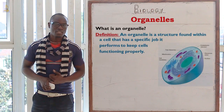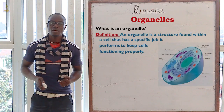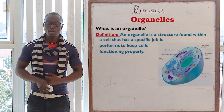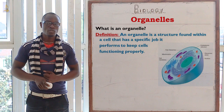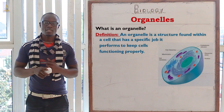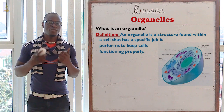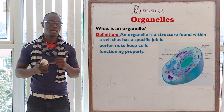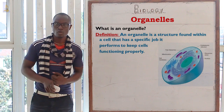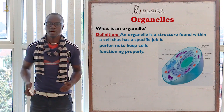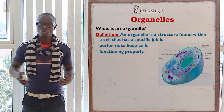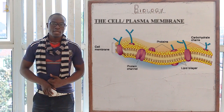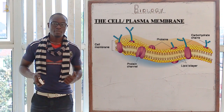Let's look at the different structures as seen under the electron microscope, because we are going to see that there is a very high difference between the structure seen in the light microscope and in the electron microscope of a cell. Let's begin with the cell membrane.